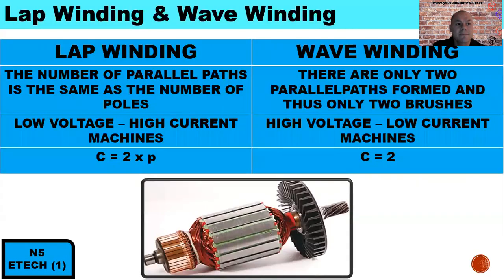Our next concept is lap winding and wave winding. The armature conductors in the armature assembly could either be wave wound or lap wound. For a lap wound armature assembly, the number of parallel paths is the same as the number of poles. It is used for low voltage and high current applications. The small letter C represents the number of parallel paths; therefore for lap winding it will be 2 times small letter P, which is the pole pairs.